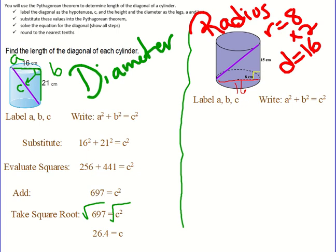C is the side across from the right angle which is your diagonal, the hypotenuse. My other two sides are my legs. I'm going to call A 16 and B 15.